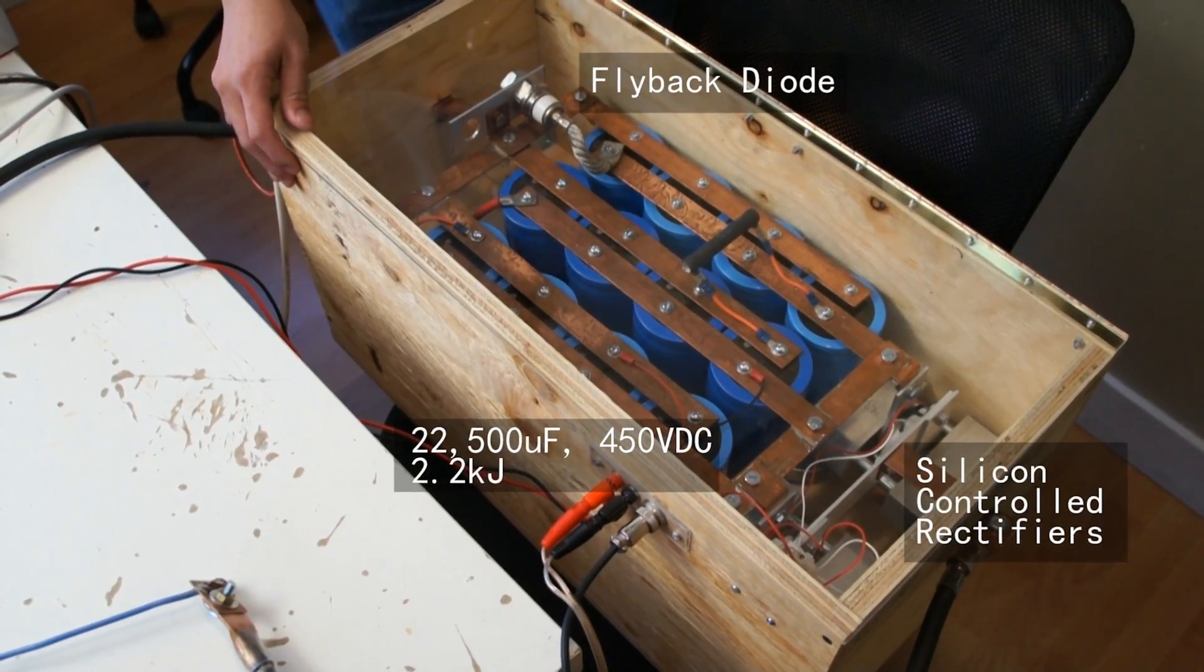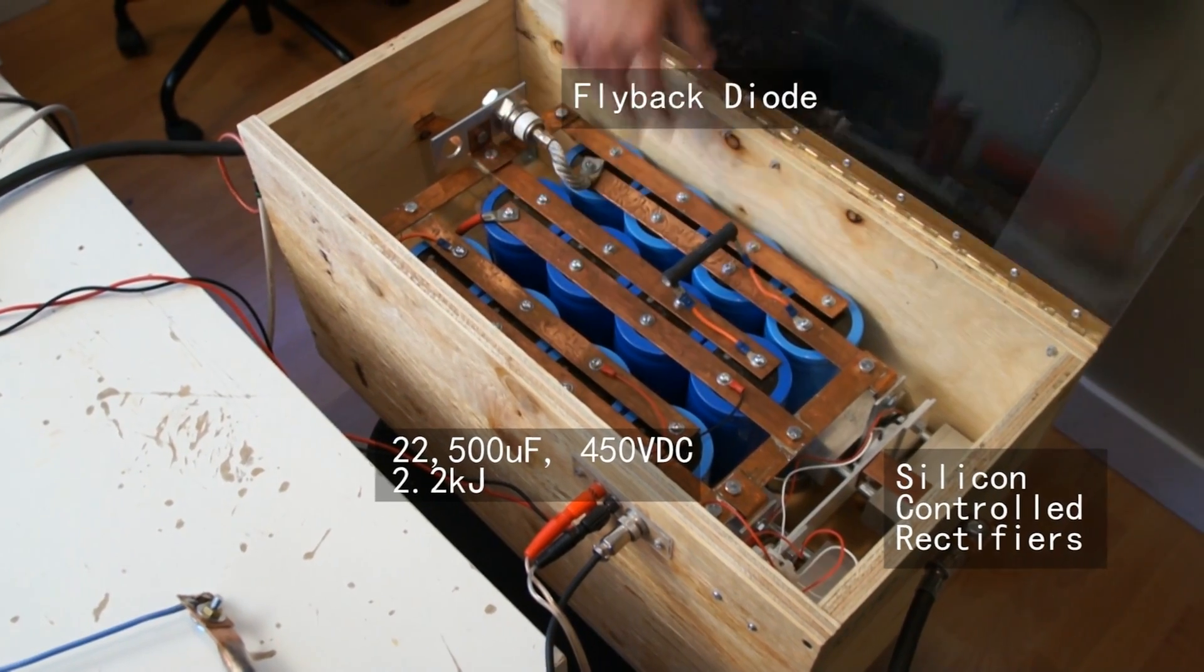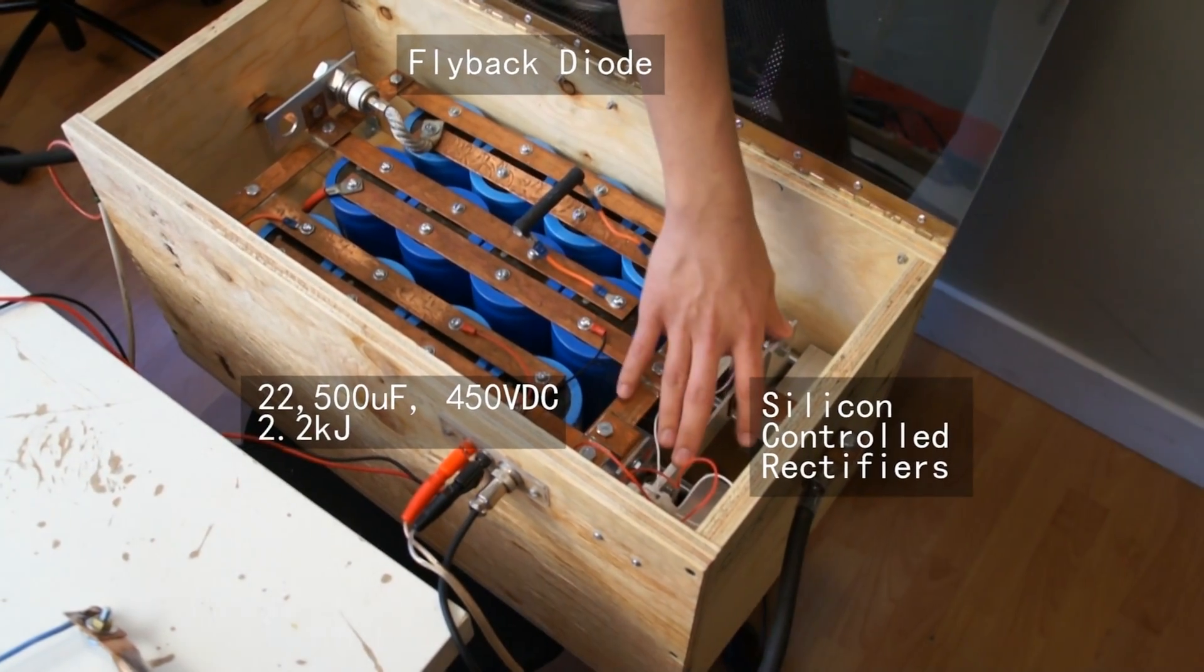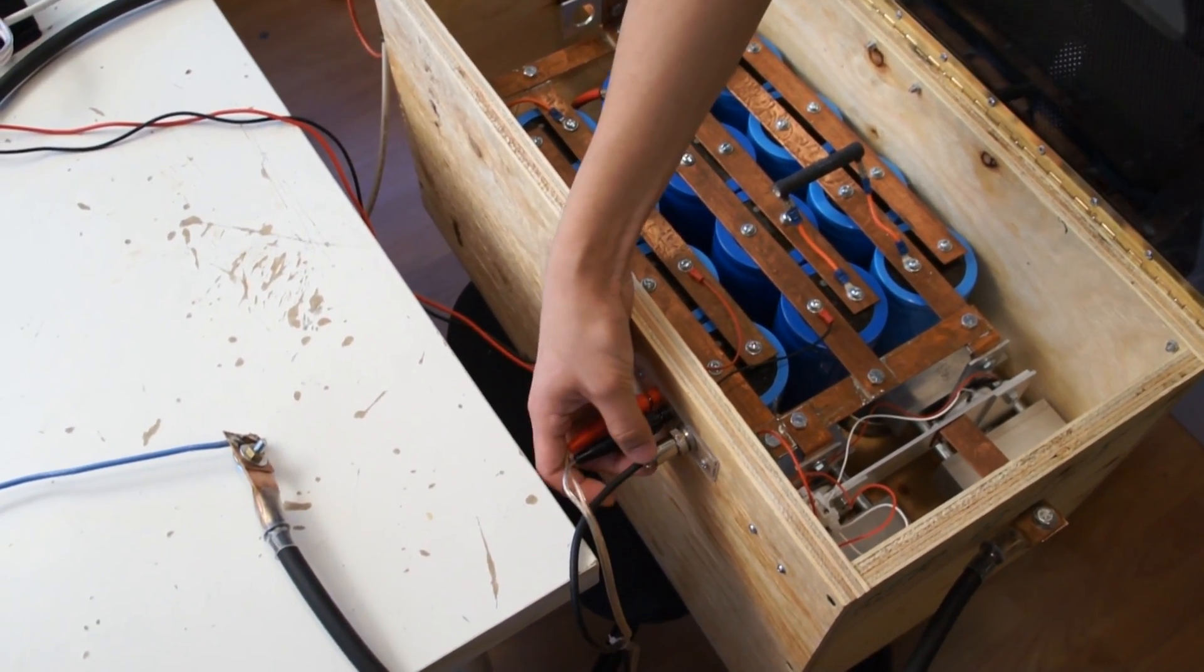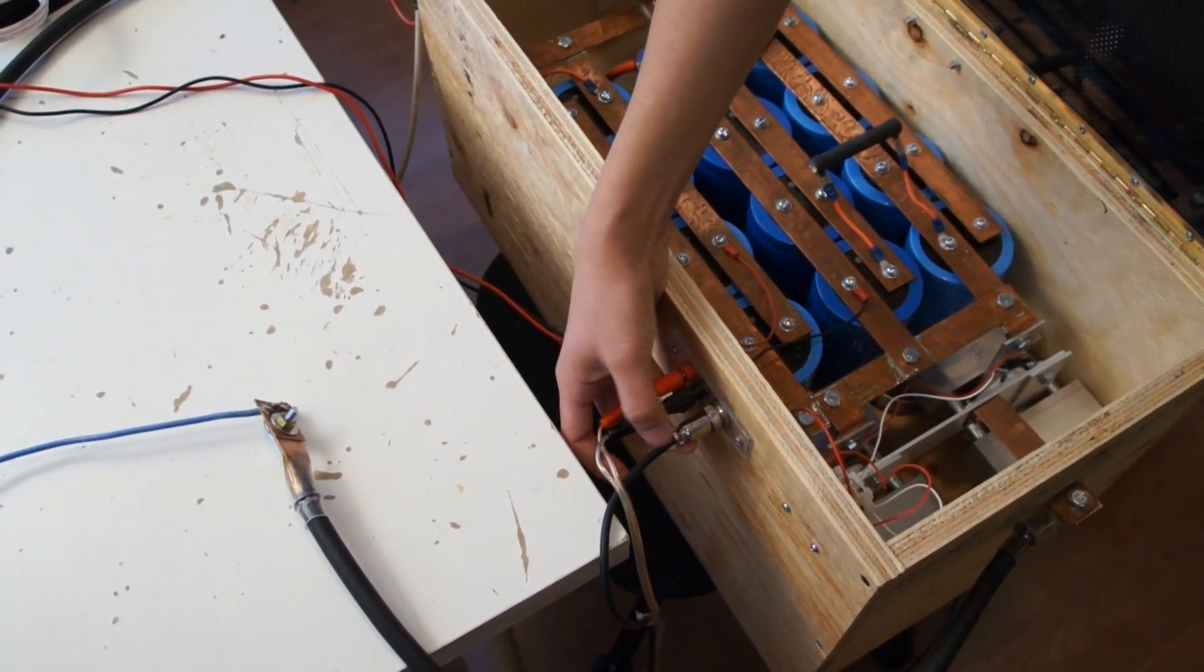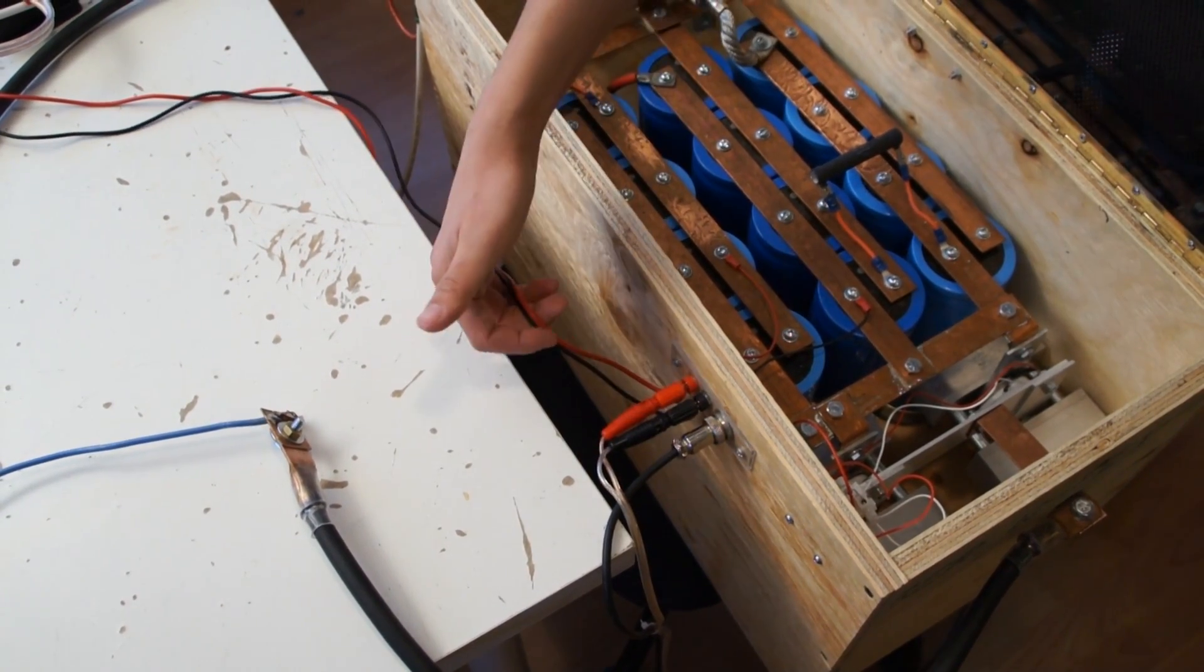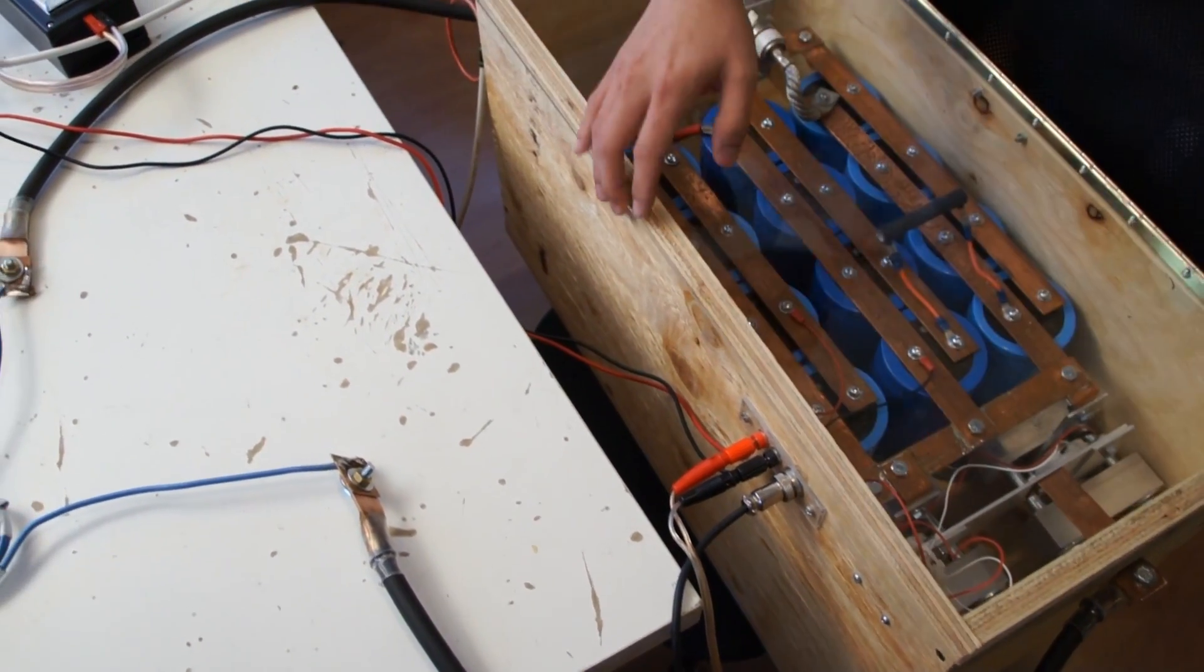Starting from this end, we have a 22,500 microfarad, 450-volt DC capacitor bank with solid-state switching. On the side here we have our charging leads as well as our control signal cables, and our voltage sense leads that lead to our instrumentation.